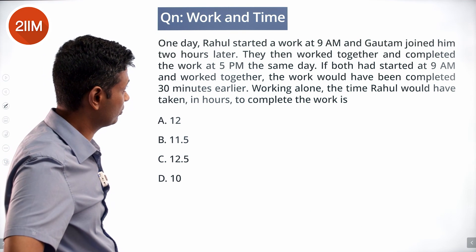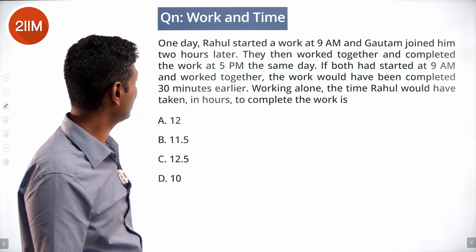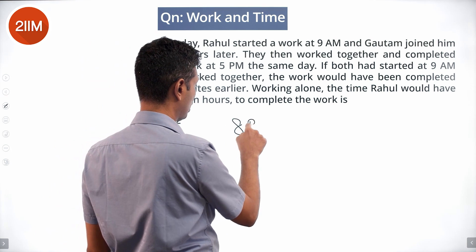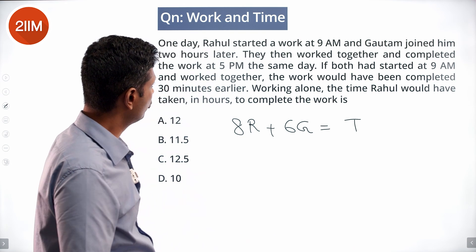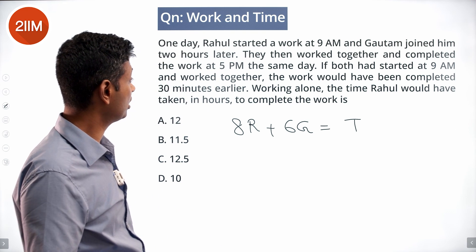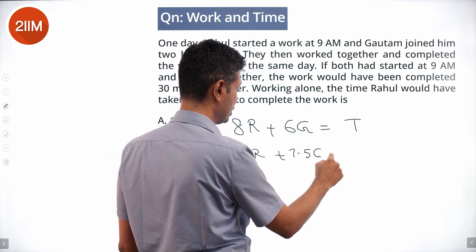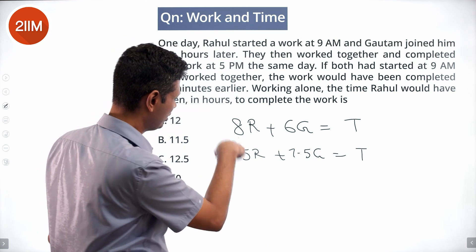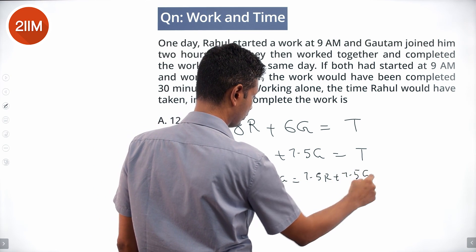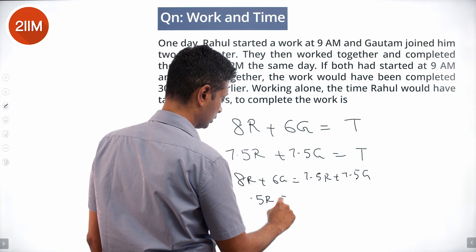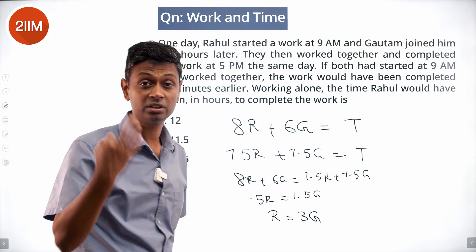One day Rahul started work at 9 a.m. and Gautam joined 2 hours later. They worked together and completed by 5 p.m. So Rahul works 8 hours and Gautam 6 hours: 8R + 6G = 1 task. If both had started at 9 a.m. they'd finish 30 minutes earlier (at 4:30 p.m.): 7.5R + 7.5G = 1 task. Equating: 0.5R = 1.5G, so R = 3G — Rahul is three times as fast as Gautam.